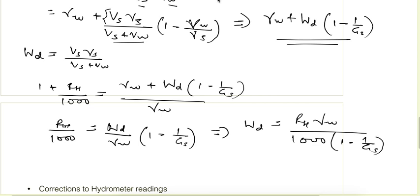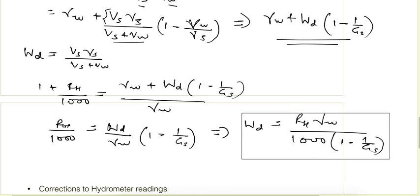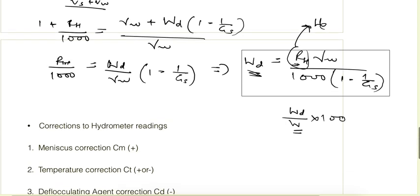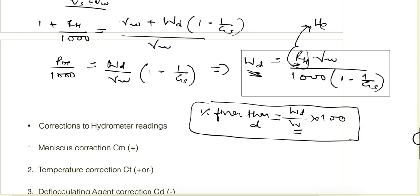Wd is the concentration of solids at depth He and at time t, corresponding to the hydrometer reading H at depth He. As we saw, this is the weight of solids per total volume of suspension, giving the weight of solids at height He. Dividing by W — the weight of solids in the initial concentration — gives the percentage finer than D. With these two values we can plot the grain size distribution curve.